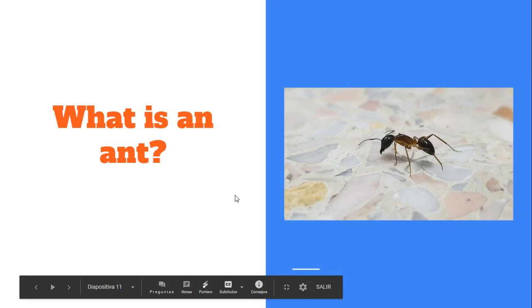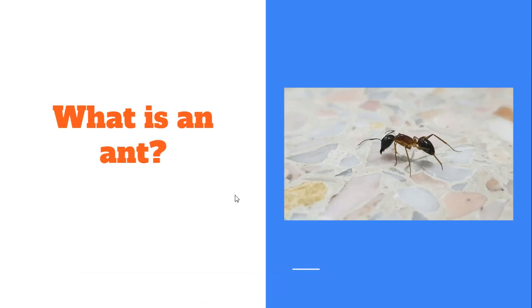And what about an ant? Do you think it's a vertebrate or an invertebrate? An ant is also an insect because they don't have bones, so it's also an invertebrate animal.